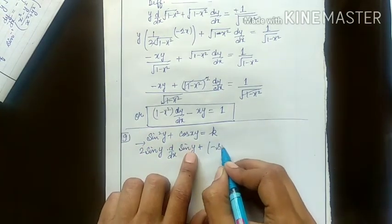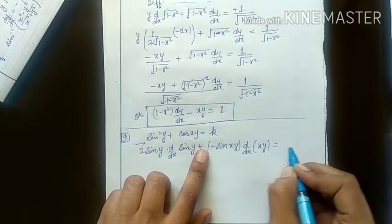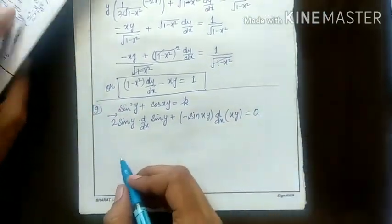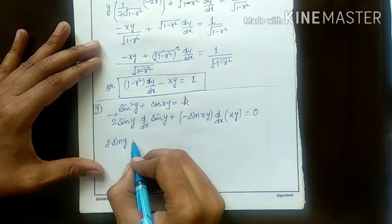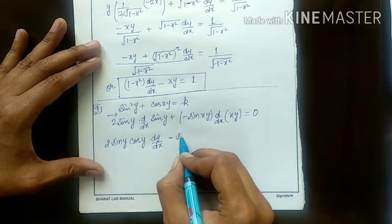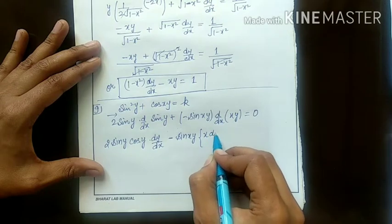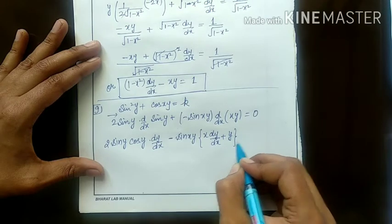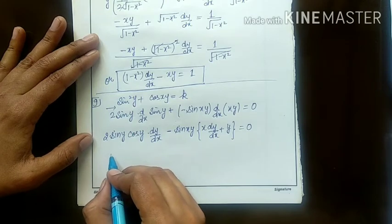The derivative of cos(f(x)) is minus sine(f(x)) into further derivative of f(x), meaning derivative of xy. And k's derivative is 0 because it is constant. So this is 2 sine y and derivative of sine y is cos y into dy by dx, and minus sine of xy into, applying product rule again: x as it is into dy by dx plus y as it is, x's derivative is 1, is equal to 0.